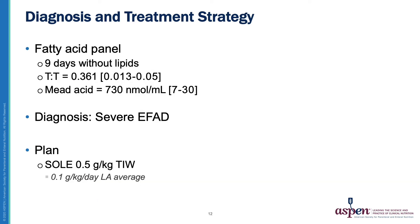Because the patient was now not receiving any lipid source and had a malnutrition diagnosis, a fatty acid panel was drawn on PN day 22 due to concern for EFAD. The results showed an elevated T-to-T ratio and elevated mead acid. Based on these labs, the patient was diagnosed with severe EFAD.